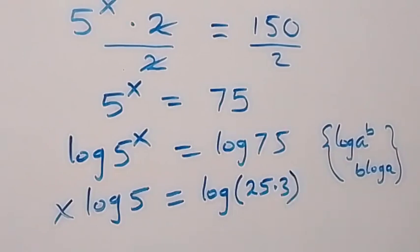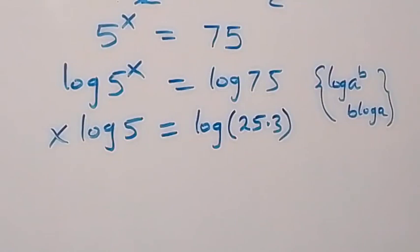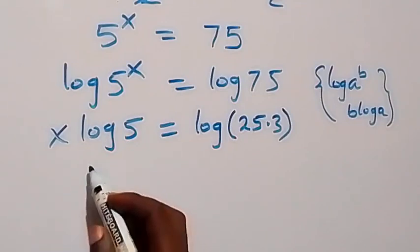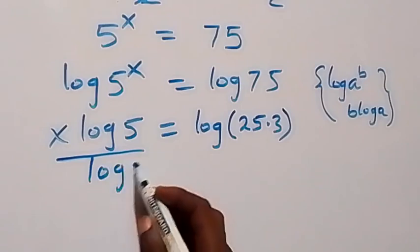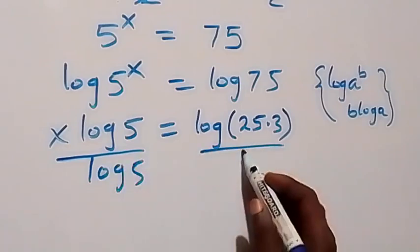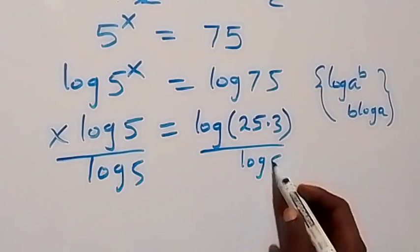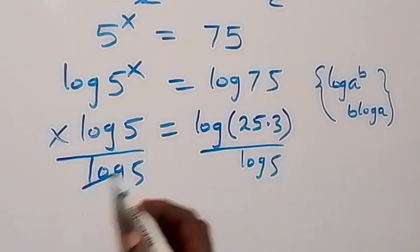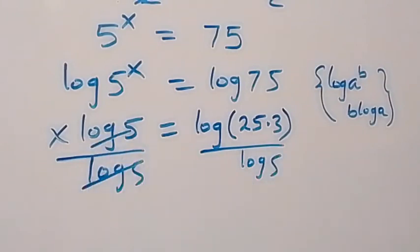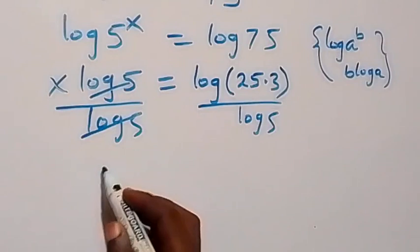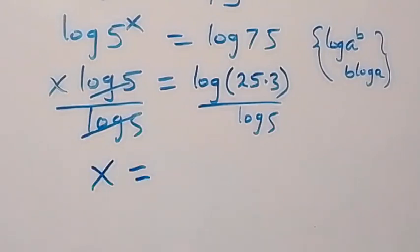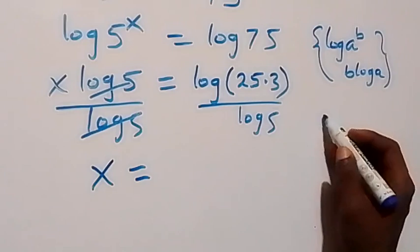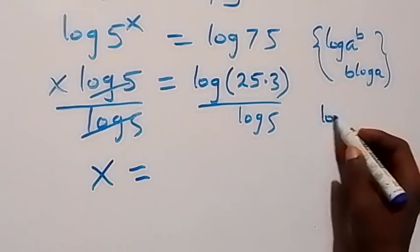Then from here we can divide both sides by log 5. We have x log 5 divided by log 5 here, and also divide the right side by log 5. Log 5 cancels out, giving us x now equals to log(25 times 3) over log 5.